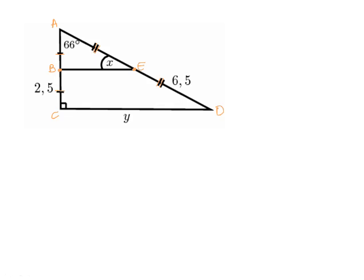So what we know about the line that joins the midpoints of two sides of a triangle is that it is parallel to the third side. So we would be able to say that BE is parallel to CD because it is the line joining the midpoints of two sides.